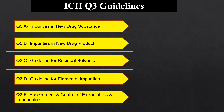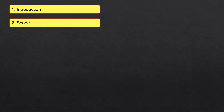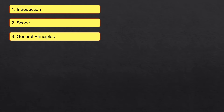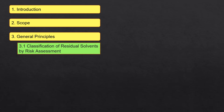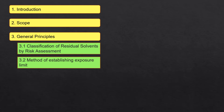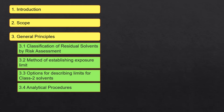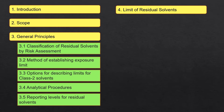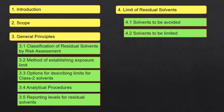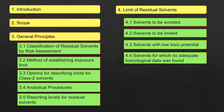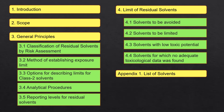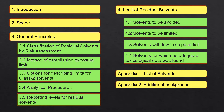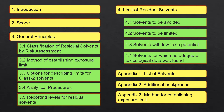In this presentation, we will have a look at the guideline for residual solvents, that is ICH Q3C. This guideline includes introduction, scope, and general principles which cover classification of residual solvents by risk assessment, method for establishing the exposure limit, options for describing limits for class 2 solvents, analytical procedures, and reporting level for residual solvents. Then there are limits for residual solvents defined into this guideline, which includes solvents to be avoided, solvents to be limited, solvents with low toxic potential, and solvents which have no adequate toxicological data available. There are appendices provided: appendix 1 is the list of solvents, appendix 2 is additional background, and appendix 3 is the method of establishing the exposure limits. We will cover the method of establishing the exposure limit during the presentation, but will not touch all the appendices.